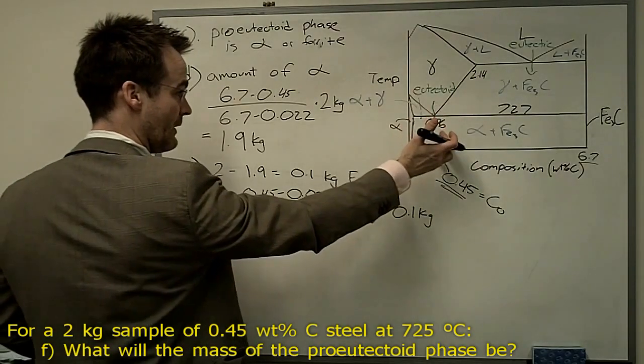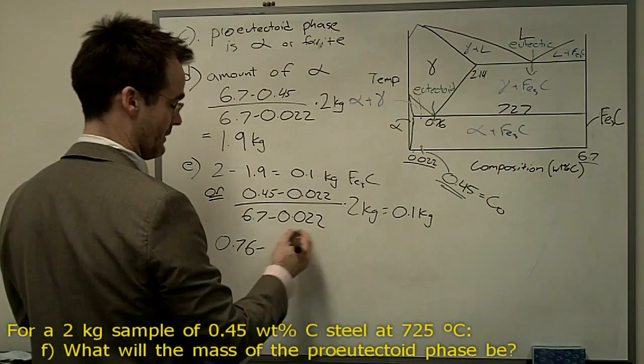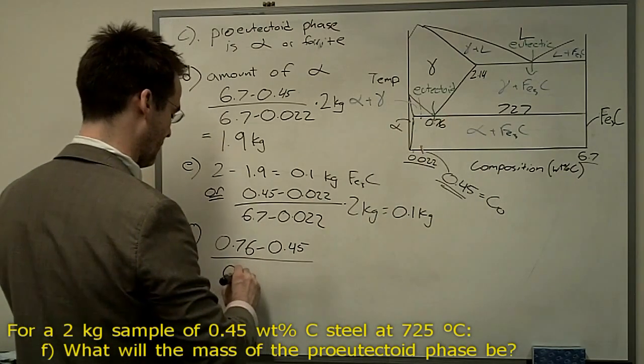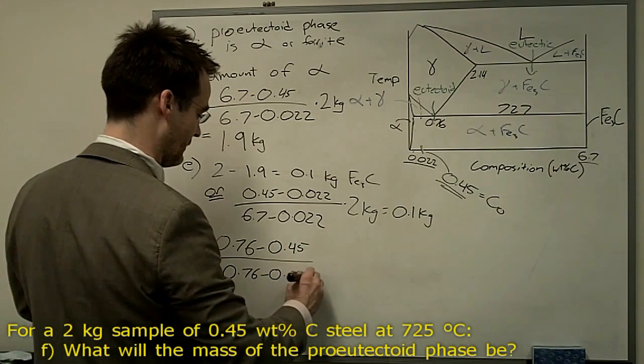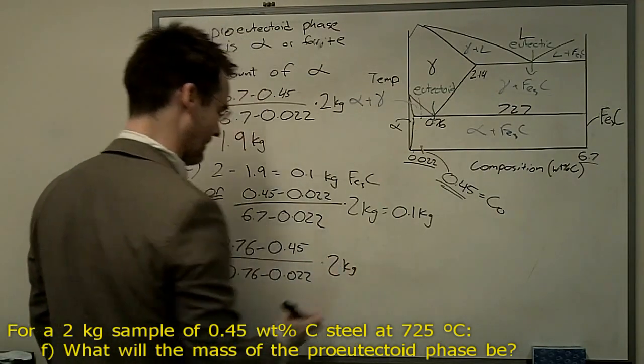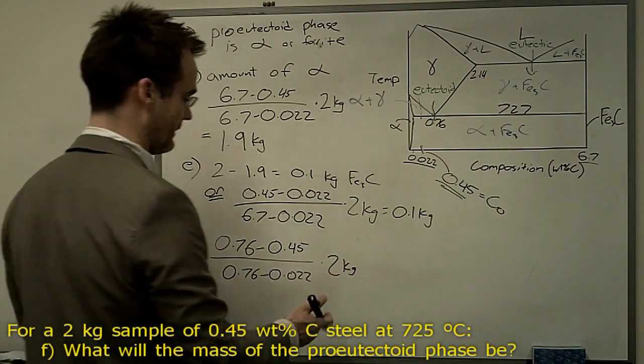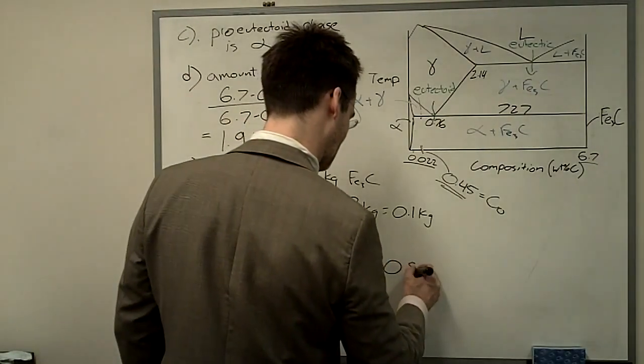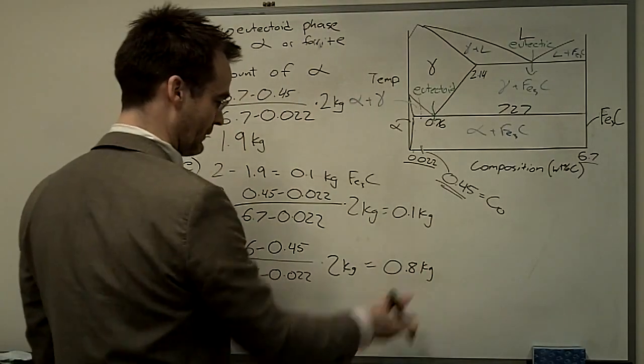Okay, so opposite side again, we're going to take 0.76 minus 0.45 divided by the total length of the line 0.76 minus 0.022. Let's see, it's asking for the mass again, so we're going to multiply by 2 kilograms. If it was asking for the weight percent, you'd multiply by 100%. But it gives us the mass in this case here, so we know we've got 2 kilogram sample. Multiply that out, and we're going to get 0.8 kilograms. Again, always include your units.